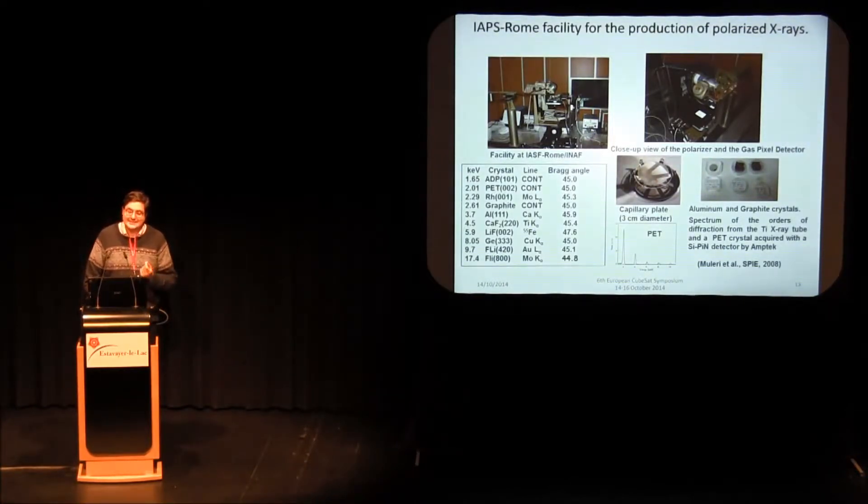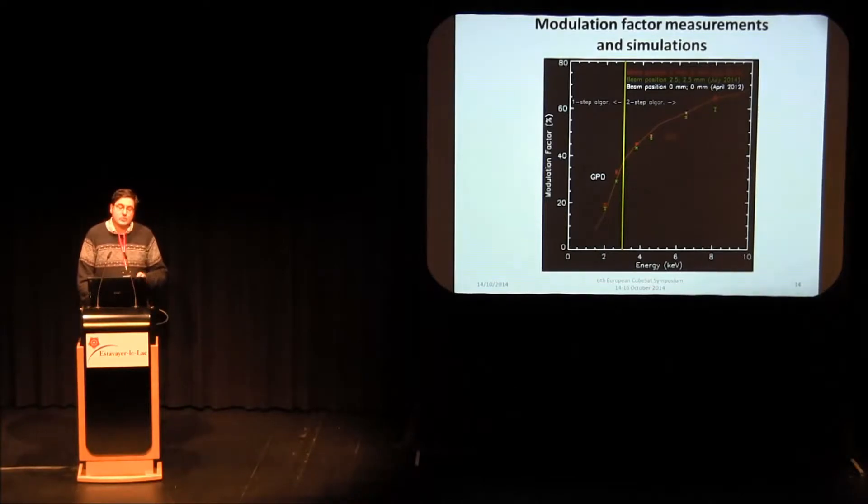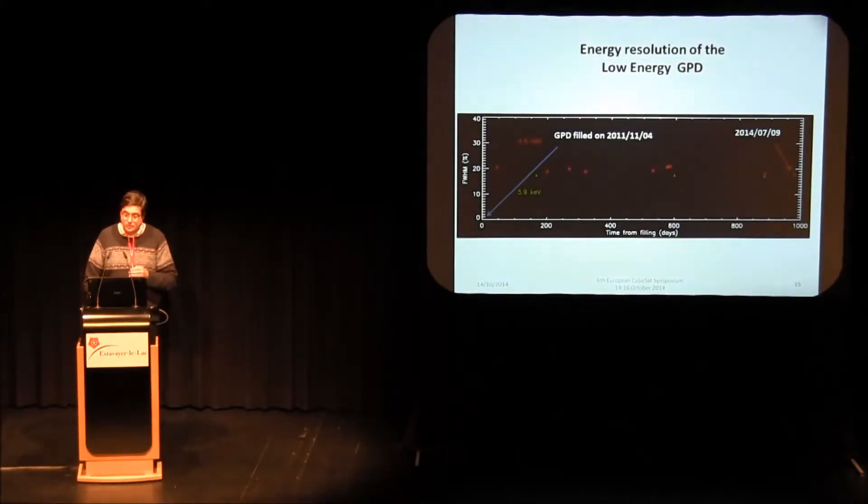We built a calibration facility in order to study the performance and the modulation factor of the gas pixel detector by producing monochromatic and polarized X-rays. What this shows is actually how the modulation factor increases with energy. These are points with Monte Carlo comparisons. You can see the modulation factor increase with energy because the larger is the energy, the longer is the track, the easier it is to reconstruct the emission direction. If you can see here, the measurements done in 2012 were basically the same on the modulation factor measured more than two years later. So the modulation factor performance is very stable with time, and this is also true for the energy resolution. This is almost 1000 days since filling the detector, which is sealed, and the energy resolution is quite stable.